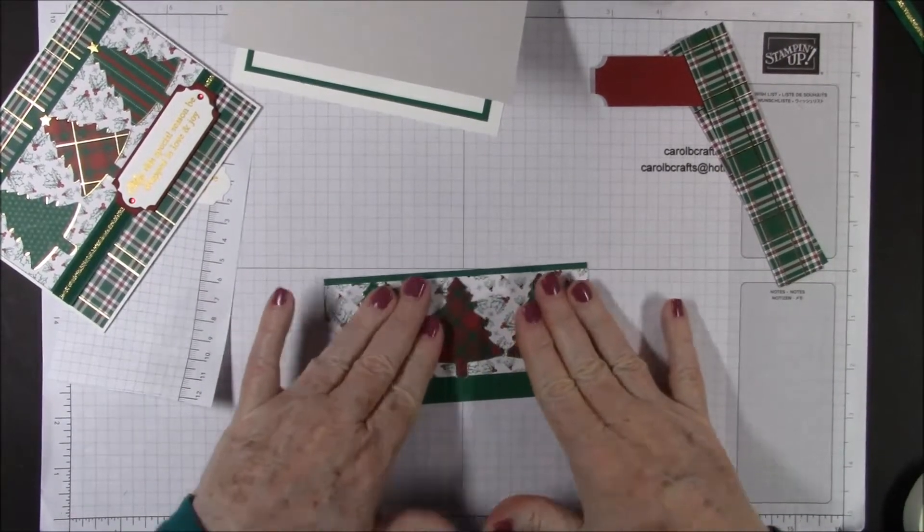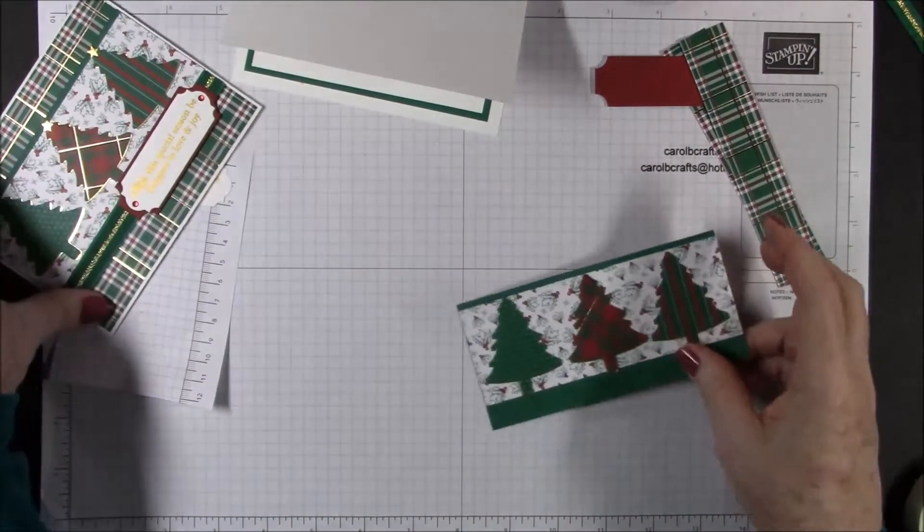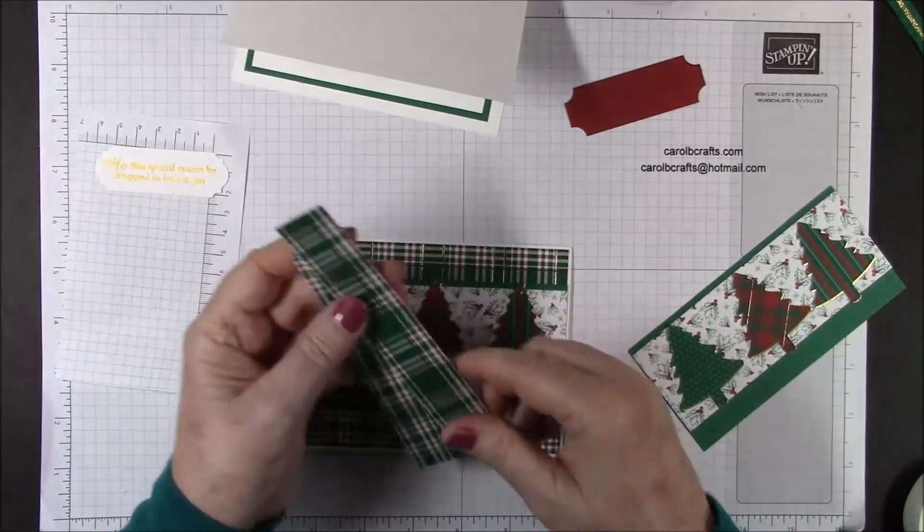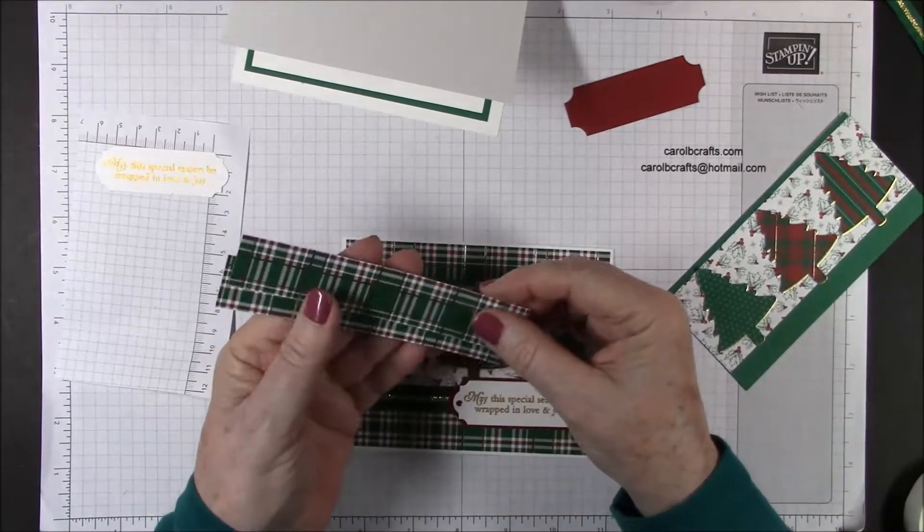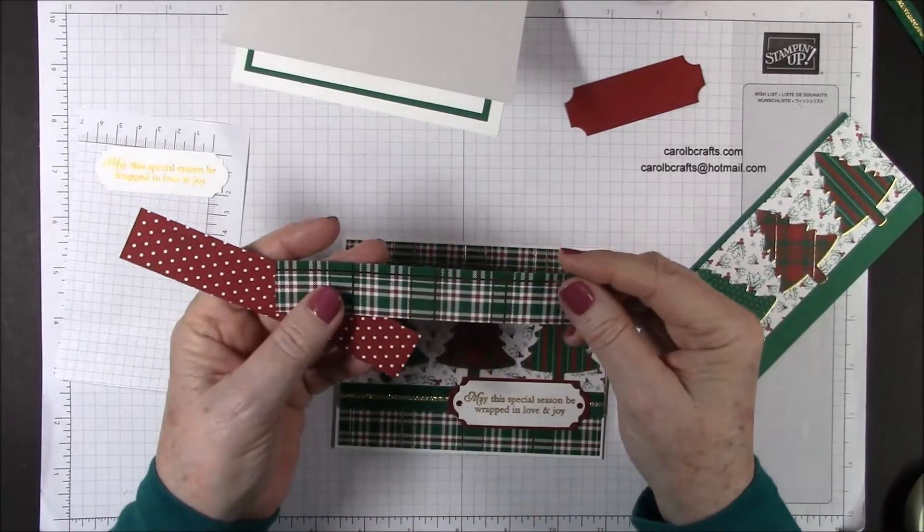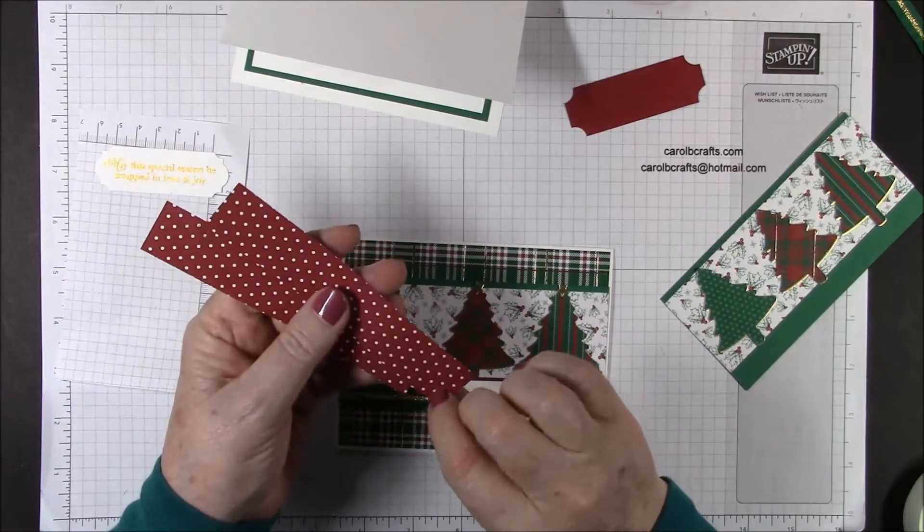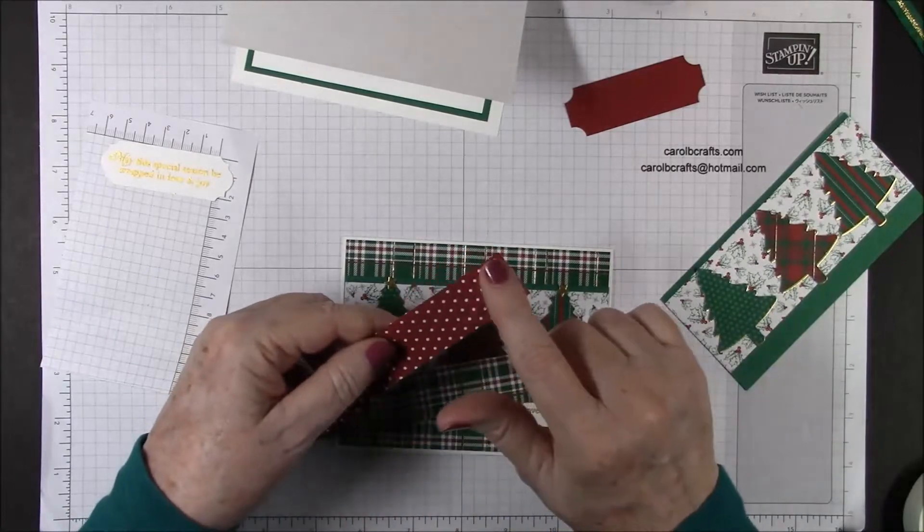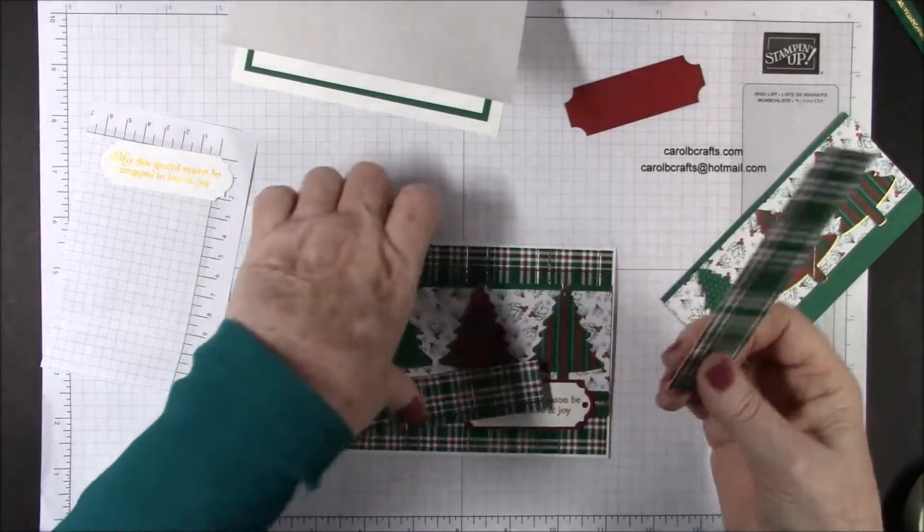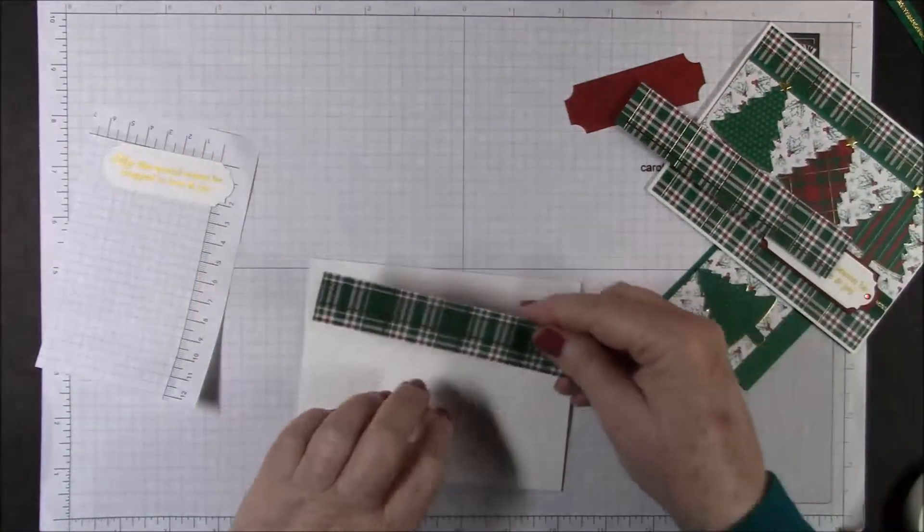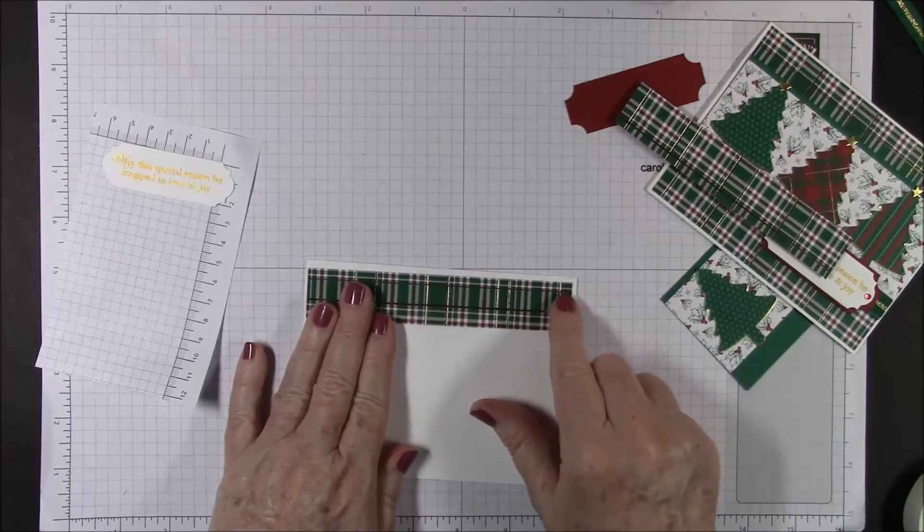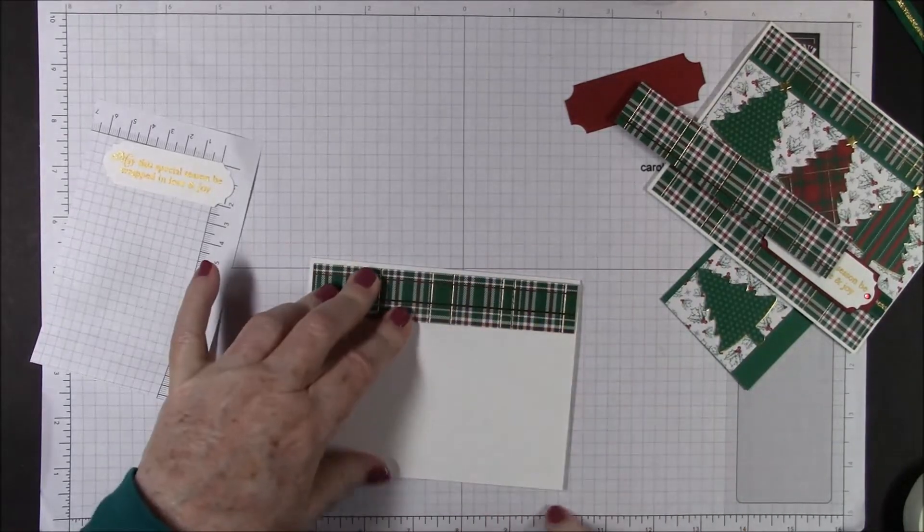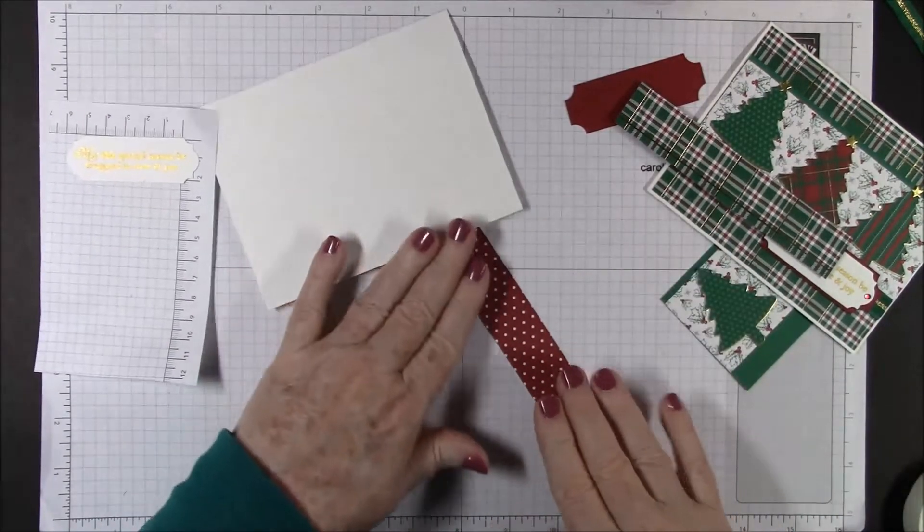I'll put the other two on. Now this is ready to go on the front of our card, but first we're going to put two pieces of some more of the DSP. Each one of these is five and three eighths inches wide by one inch high.